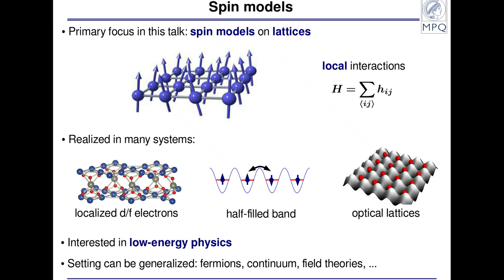There's a wide range of regimes where these systems actually appear. The kind of physics we're interested in is mostly at low temperatures — in particular, we'll be thinking about ground states and the excitations on top of them. One particular reason is that these systems exhibit the most entanglement. We expect they exhibit the most unconventional physics, because as we raise the temperature of a system, it gets less and less entangled and should become more and more classical.